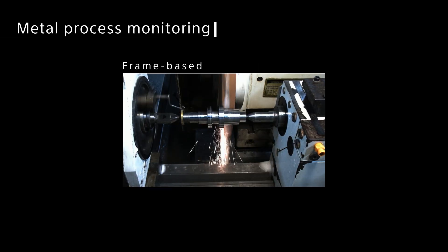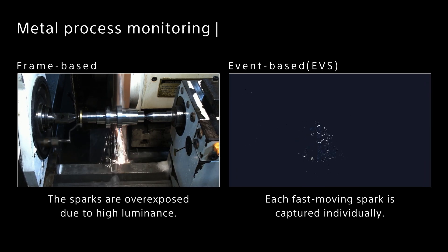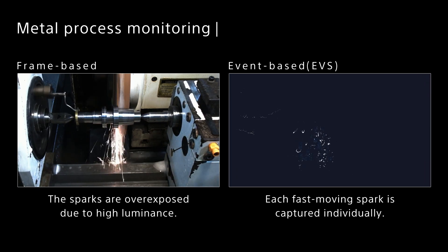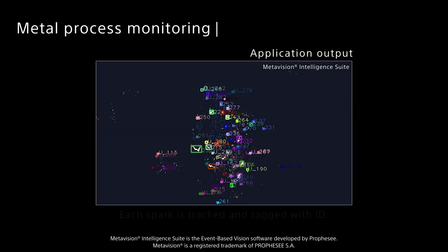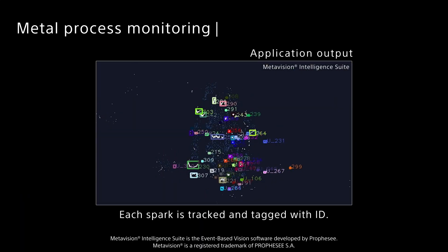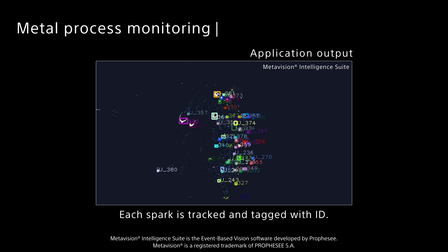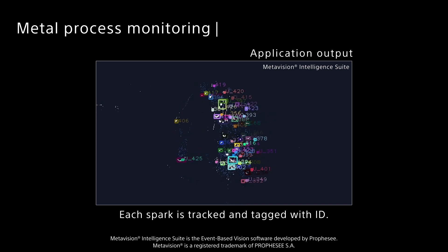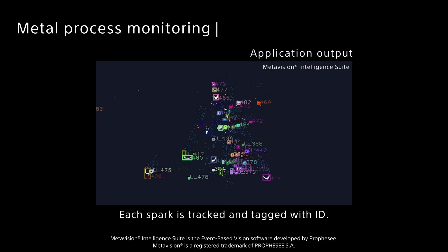Metal process monitoring. With the event-based vision sensor, each fast-moving spark is captured individually. Other than sparks or spinning equipment, data such as stationary jigs are not output. EVS facilitates data analysis of machining conditions.